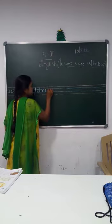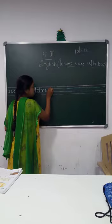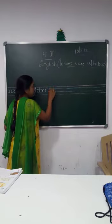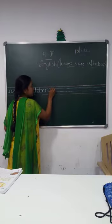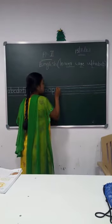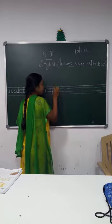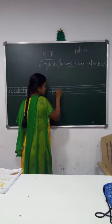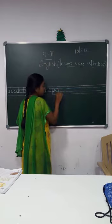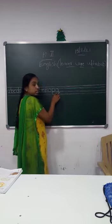Letter O: left curve, come, touch the blue line, go up, join again on the blue line, standing line, right curve. Letter P: start from the blue line, stop on the red line — standing line, right curve. Letter Q: left curve, come, touch the blue line, go up again, join the blue line, standing line, curve to the red line, left sliding line.